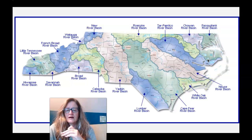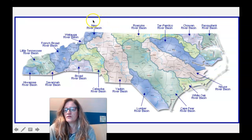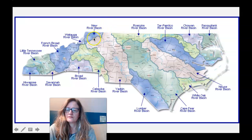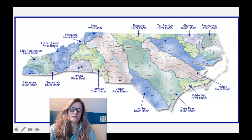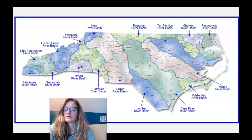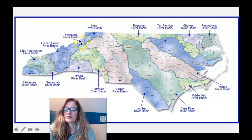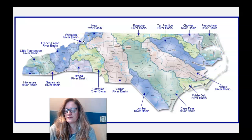In North Carolina, we have a lot of different watersheds. The New River, the Watauga, and the French Broad all flow down to the Gulf. But the Yadkin, the Catawba, and the Broad flow down to the Atlantic Ocean. Here in Boone, in Watauga County, we have the Watauga, the New River, the Catawba, and the Yadkin all within a few miles of each other.